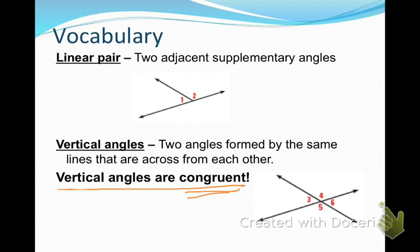Looking at our diagram, angle 3 and angle 6 are vertical angles and therefore are congruent. And angle 4 and angle 5 are vertical angles and are also congruent.